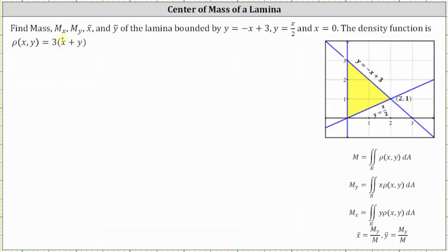We're asked to find the mass, the moment about the x-axis, the moment about the y-axis, as well as x-bar and y-bar, which would be the center of mass of the lamina bounded by y equals negative x plus three, y equals x divided by two, and x equals zero. I've already graphed the bounded region below. Let's call this region R. The density function is rho of x comma y equals three times the quantity x plus y, which we will use in the form of three x plus three y.